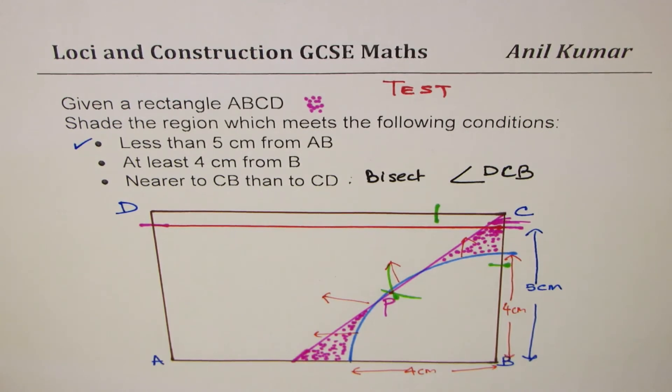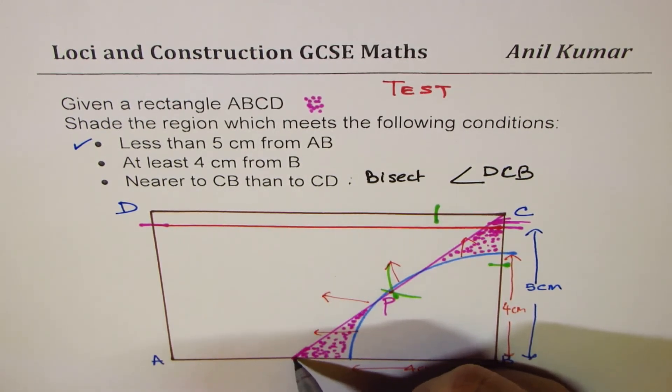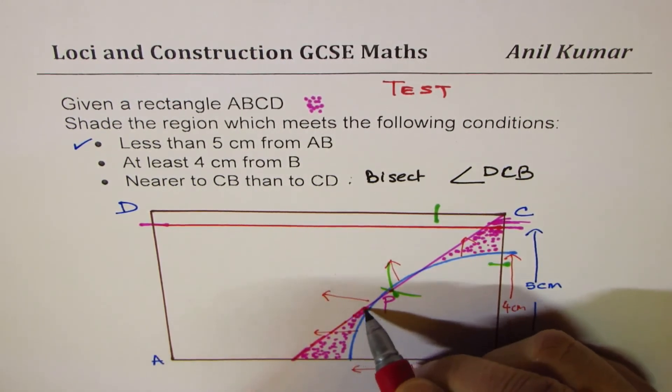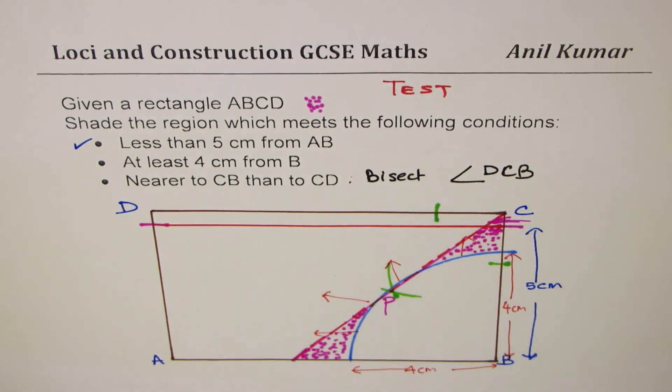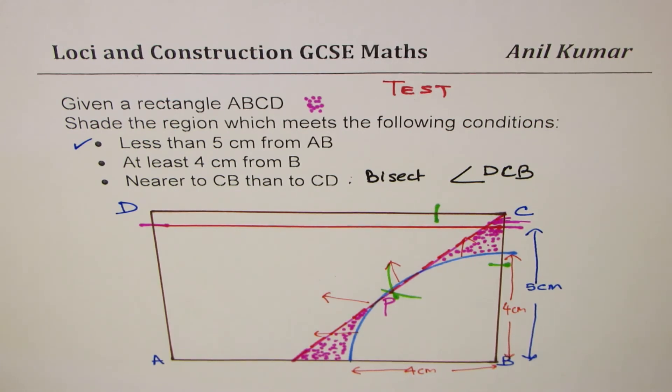Perfect. So what we also do sometimes is, we draw a dotted line here, just to make sure that we are not using any part of this line. Is that clear? So that is how you could actually solve it. So I hope that helps.